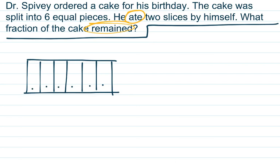So Dr. Spivey ordered this cake, and I see the entire cake. So the entire cake is going to be worth six-sixths, but he eats two slices. So I'm going to use yellow to show us the slices that he eats. So we are losing two-sixths of the birthday cake.